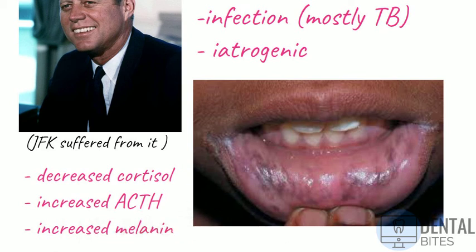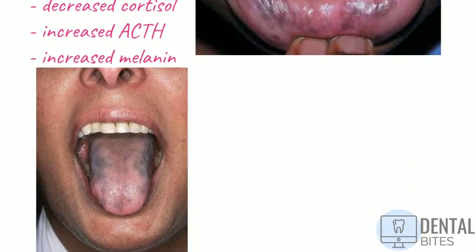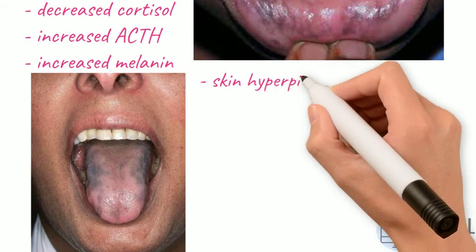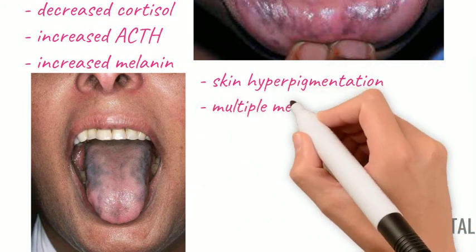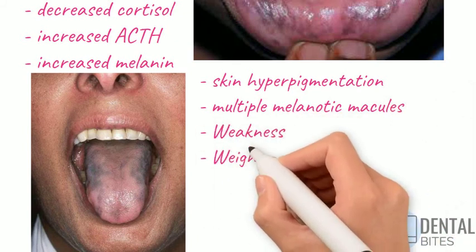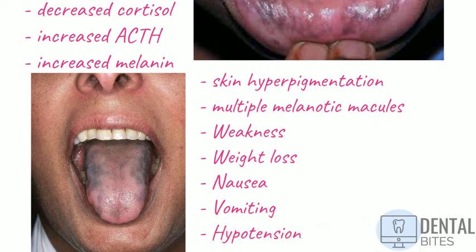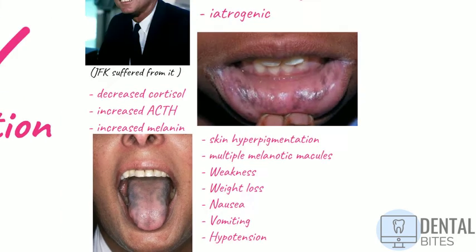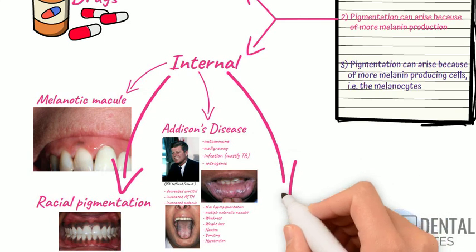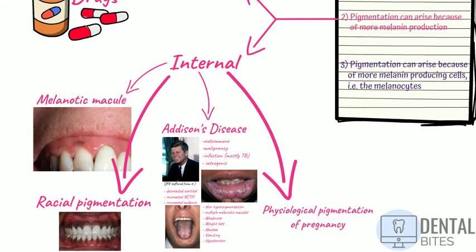Clinically, you may see hyperpigmentation of the skin as well as multiple melanotic macules on the gingiva, lips, and buccal mucosa. Patients may also complain of weakness, weight loss, nausea, vomiting, and hypotension. The condition is managed by the patient's physician with replacement steroids, and no treatment is required for the intraoral pigmentation. Next we have physiological pigmentation of pregnancy.